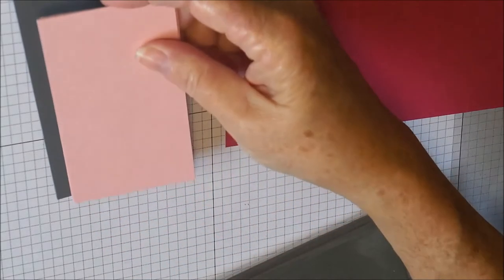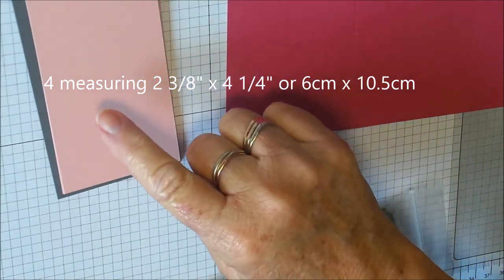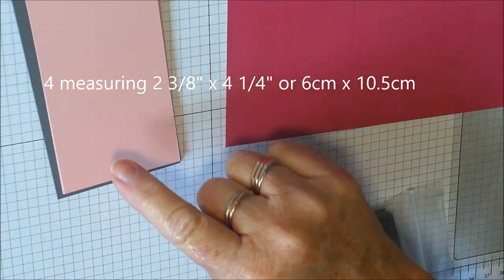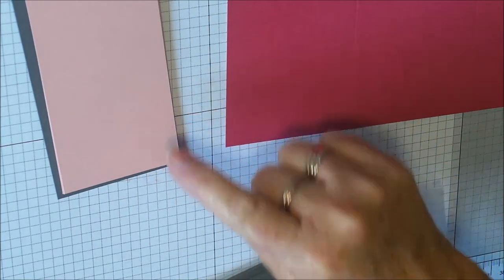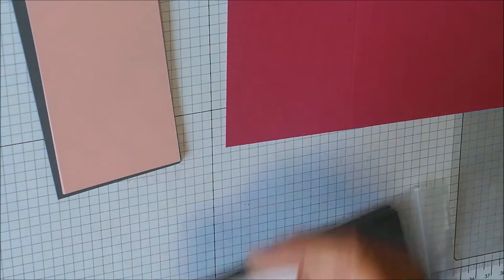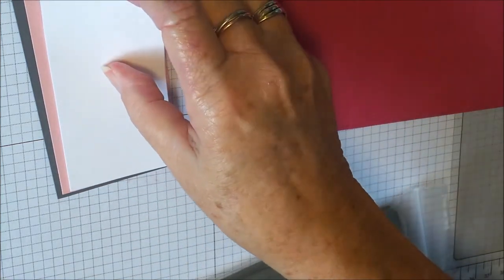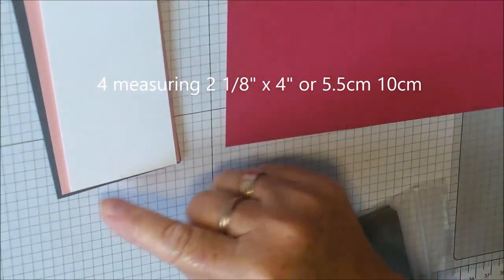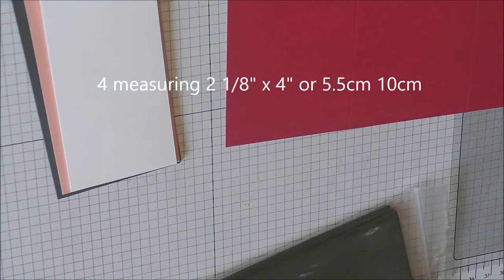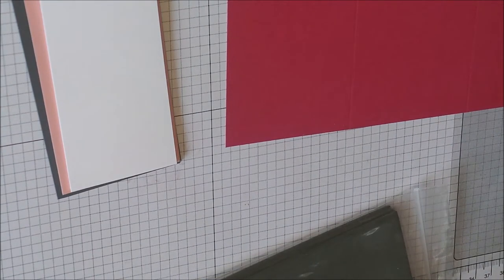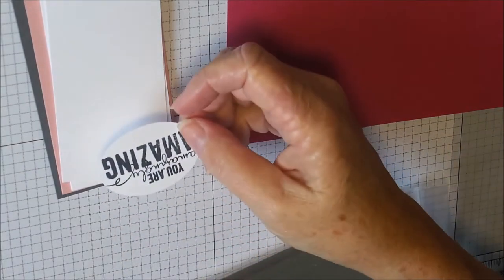Then you need four pieces of Blushing Bride measuring two and one eighths by four and a quarter. Your last mat that you're going to stamp on will be two and one eighths by four inches. You need four of those, plus you need a little scrap of Whisper White.